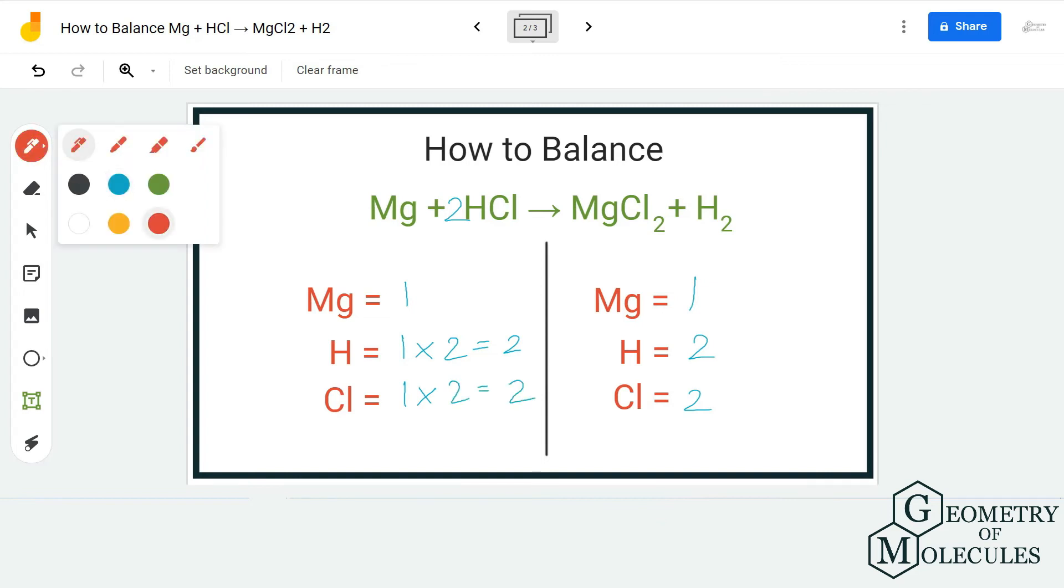Now this equation is balanced because we have the same number of magnesium atoms, hydrogen atoms, and chlorine atoms on both sides.